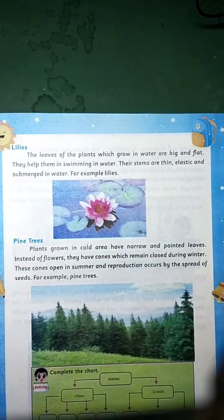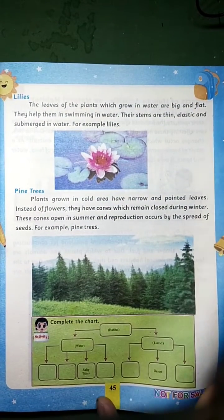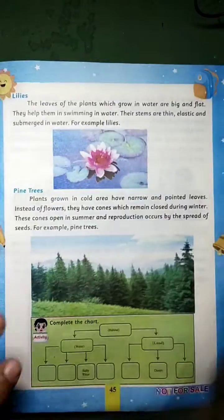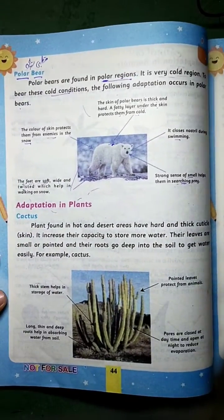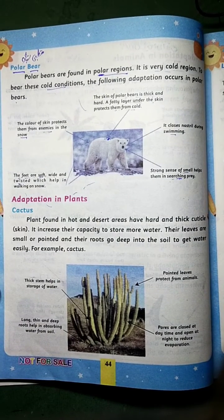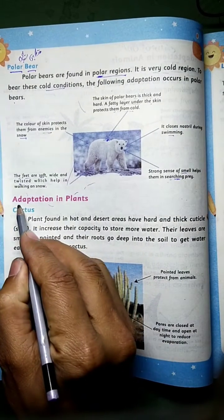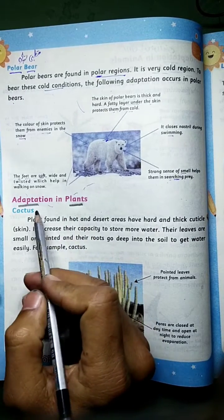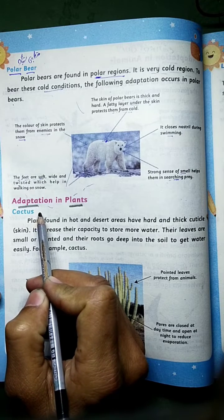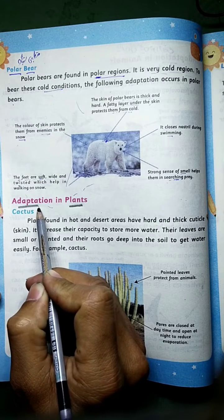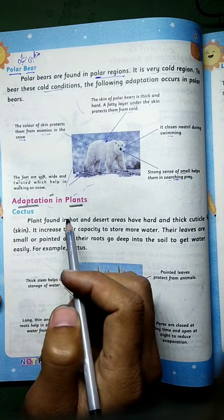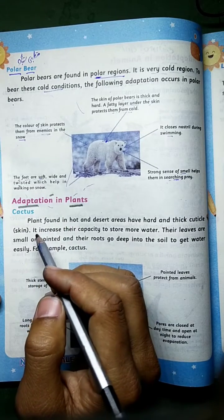Bismillahirrahmanirrahim. This is the third class in the knowledge book. Chapter number seven: Daily Backy Hisa. Today's topic is adaptation in plants — adaptation means adjusting to the environment, the mahol, the halat. This applies to plants, animals, and microorganisms.